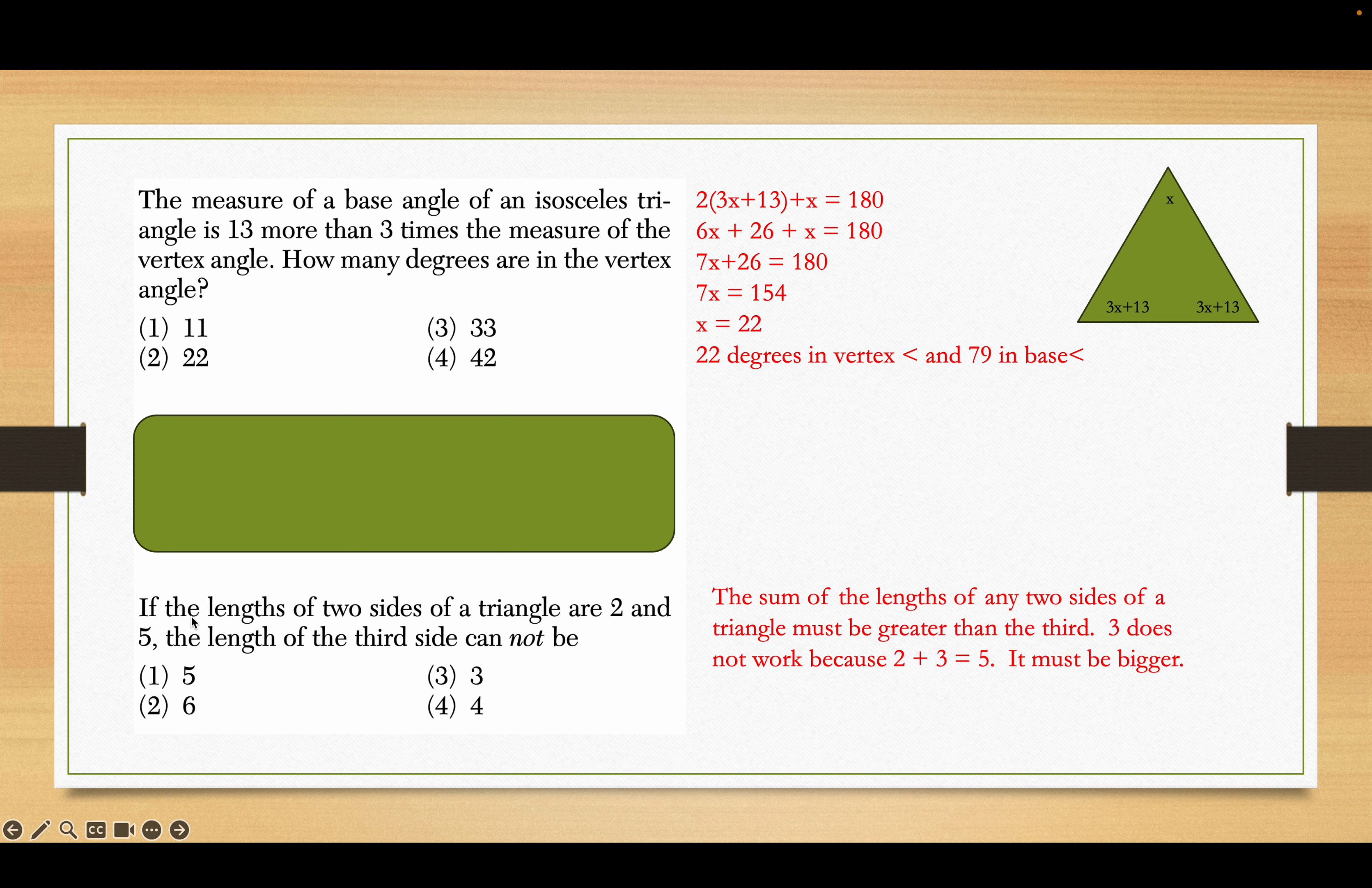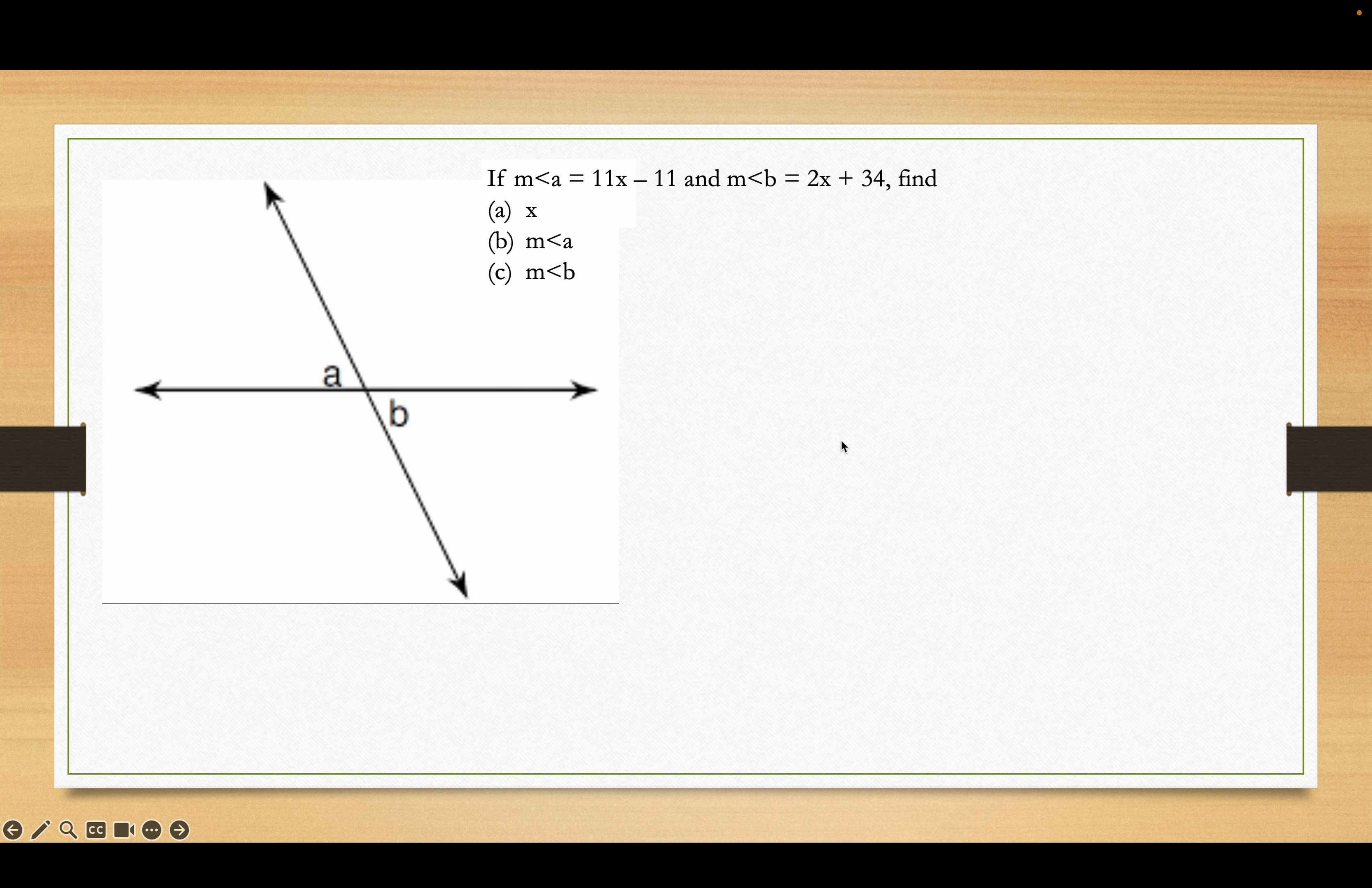Okay, as far as the last one goes, if the lengths of two sides of a triangle are 2 and 5, the length of the third side cannot be, well, it cannot be 3. Because if you add that 3 to the 2, you get 2 plus 3 is 5, and that 5 is not greater than one of the sides. It's equal to one of the sides, and we know that can't happen. It has to be bigger.